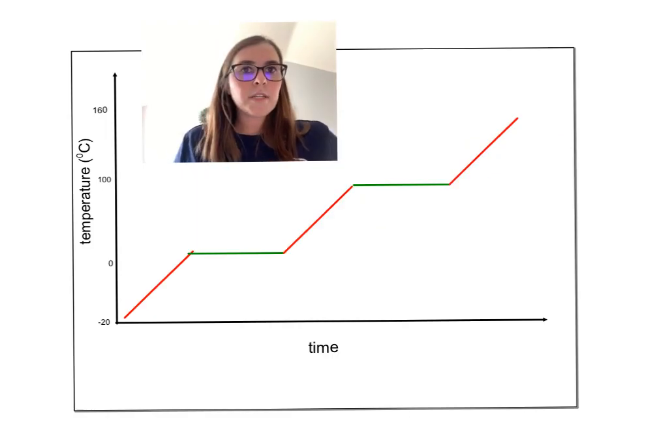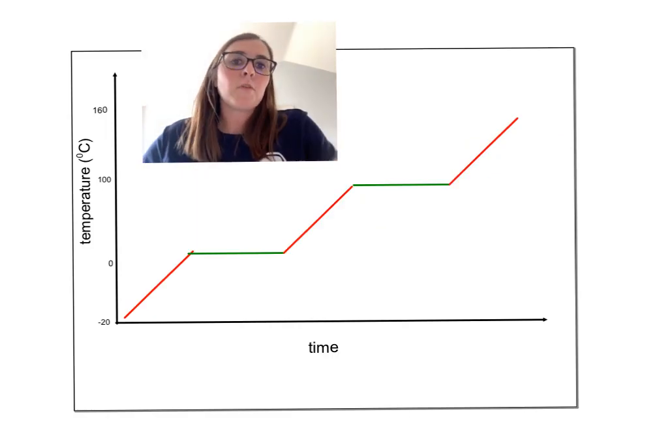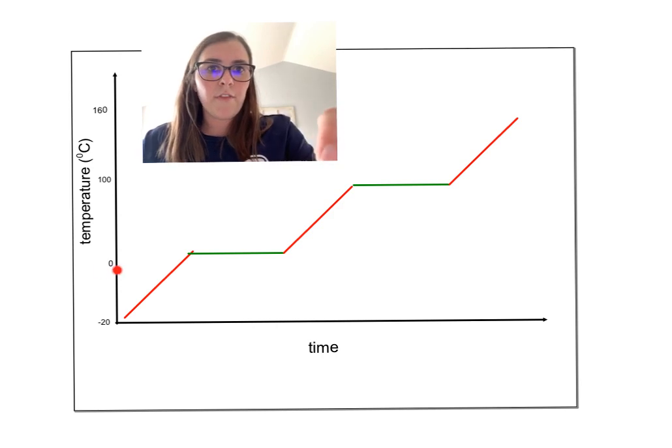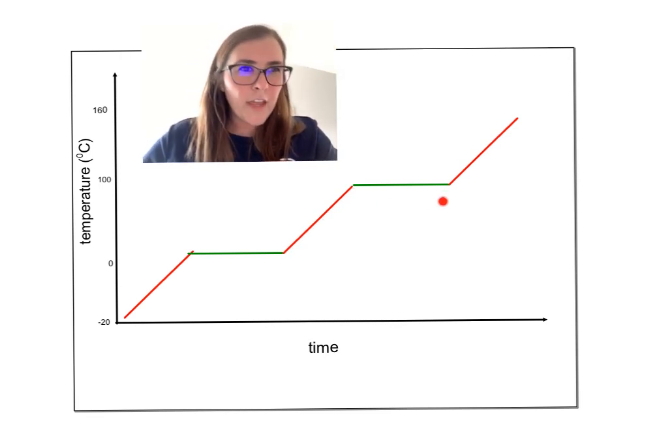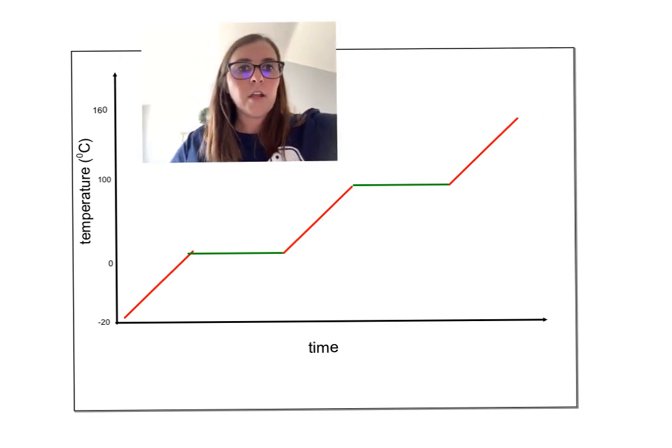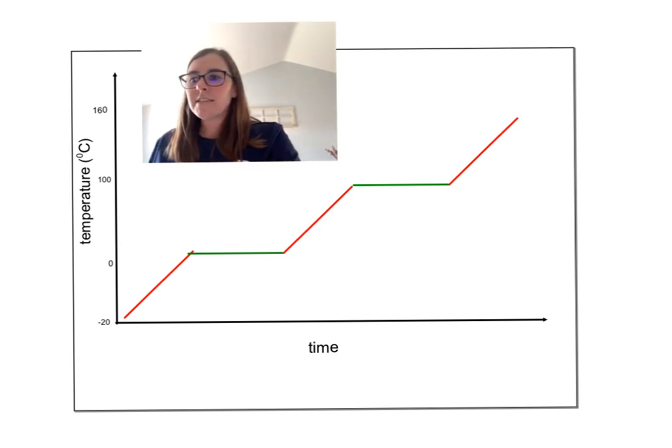This is the graph that we saw in the video for water because it's at 0 and 100 for the flat lines. Starting at a low temperature, heated up to 0, phase change, heated up to 100, phase change, heated up as a gas even hotter. We're going to put that on the inside.